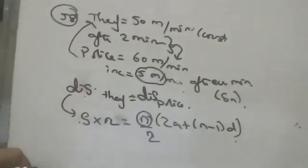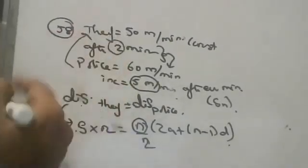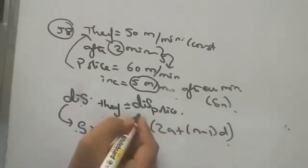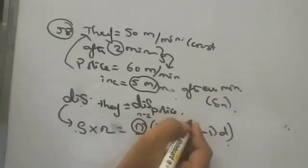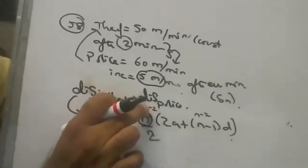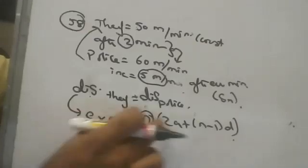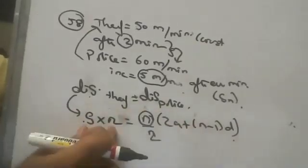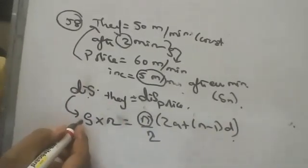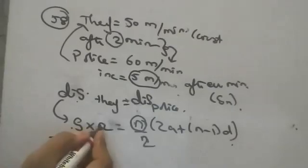Since the police is starting after 2 minutes, he is 2 minutes slow. One easy method: instead of keeping n−2 in the police's formula, we keep n+2 on the thief's side. Means the thief is 2 minutes early — he is 2 minutes late, the thief is 2 minutes early. So the thief's speed is 50 and he is starting 2 minutes early.